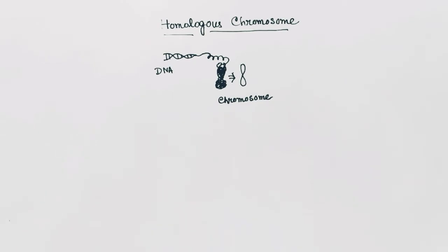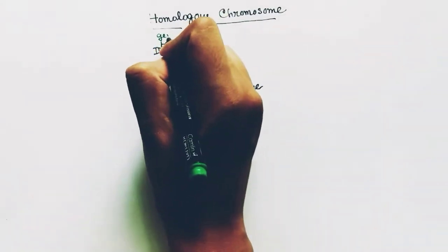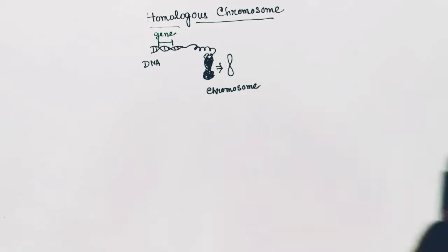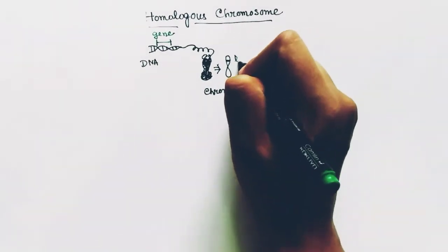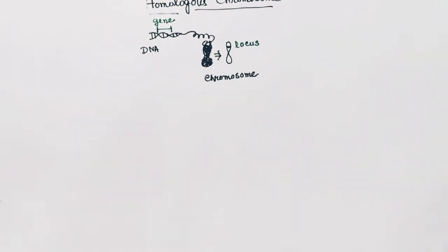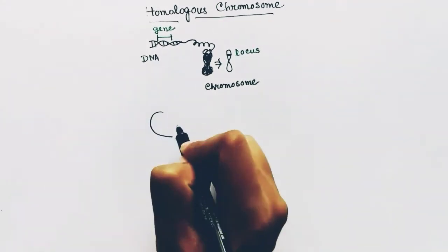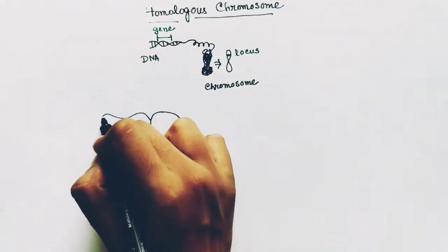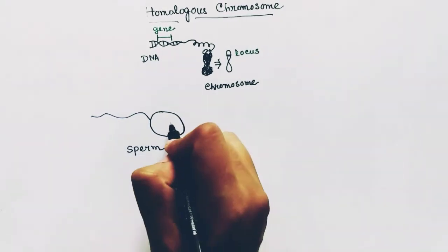In the chromosome there are genes present. A gene is a specific length of DNA which can code a specific protein or a specific RNA. The location of the gene in a chromosome is very specific, and that location of the gene in the chromosome is called the locus of the gene. Two chromosomes with the same gene locus are called homologous chromosomes.